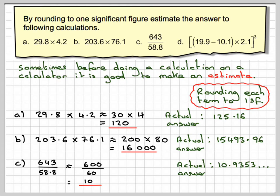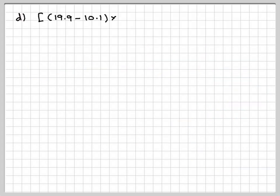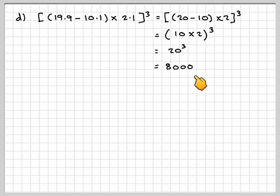So the idea is that we just get a rough approximation of what the calculation should come out to be. In part D, we've got 19.9 minus 10.1 times 2.1 all cubed. Well 19.9 will become 20, 10.1 will become 10, and 2.1 will become times 2, all cubed. 20 minus 10 becomes 10, so we've got 10 times 2 all cubed. So we need to work out 20 cubed. Now 2 cubed is 8, and then we need to add in three 0s. So that's compared with the actual answer of 8,716.379.